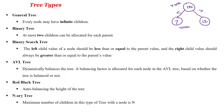So the left child should have a value less than the root, and the right child should have a value greater than the root. This kind of data structure tree is called a binary search tree. Another type is balanced trees. One type is the AVL tree, which dynamically balances the height of the tree using a balancing factor allocated for each node. Another balanced tree type is the red-black tree, where auto-balancing is done to adjust the height of the tree.